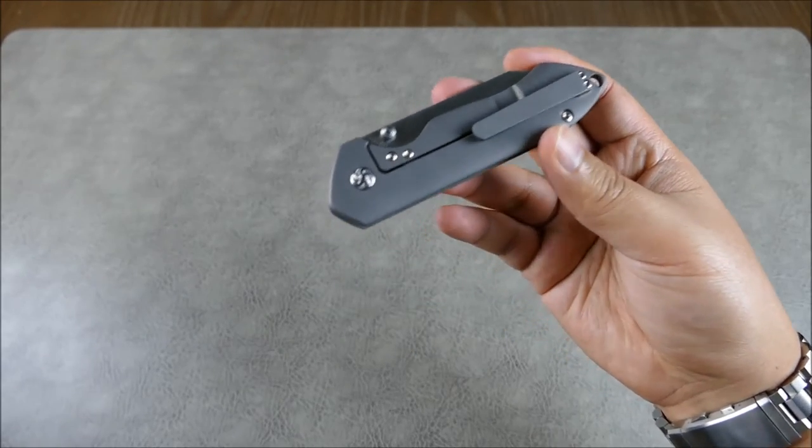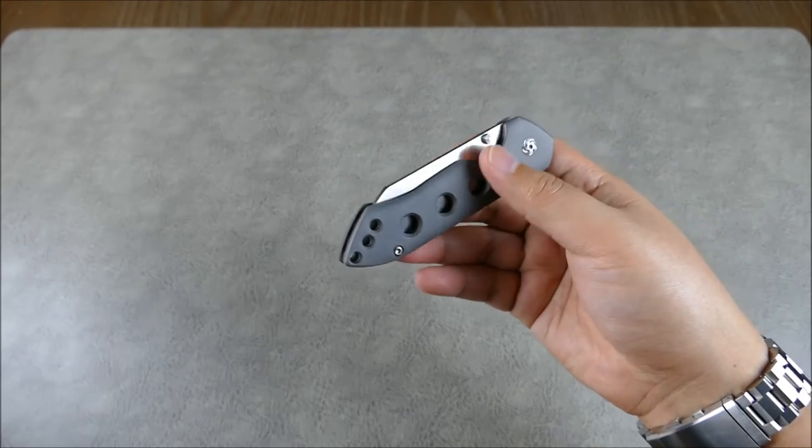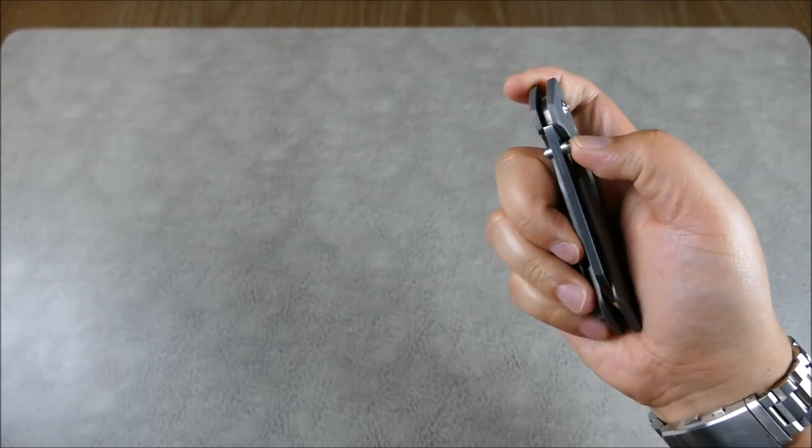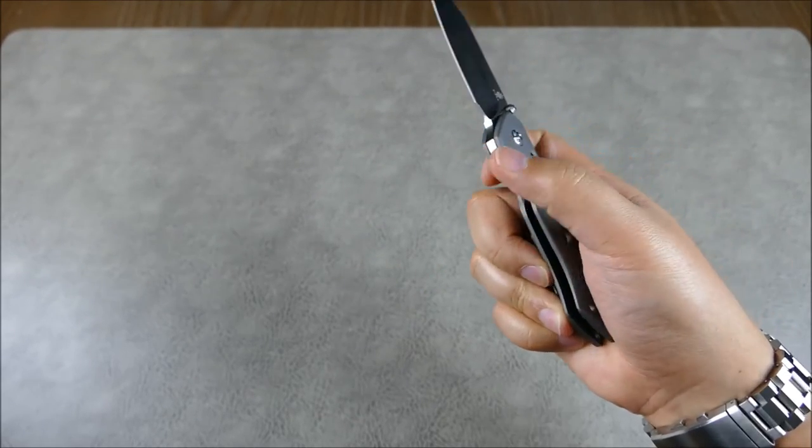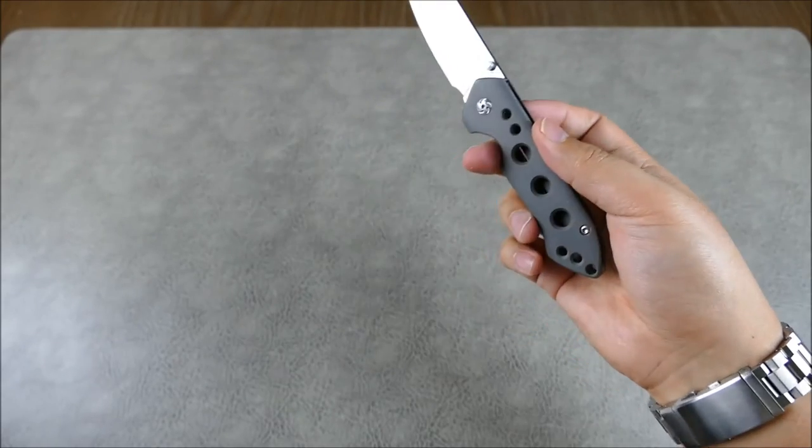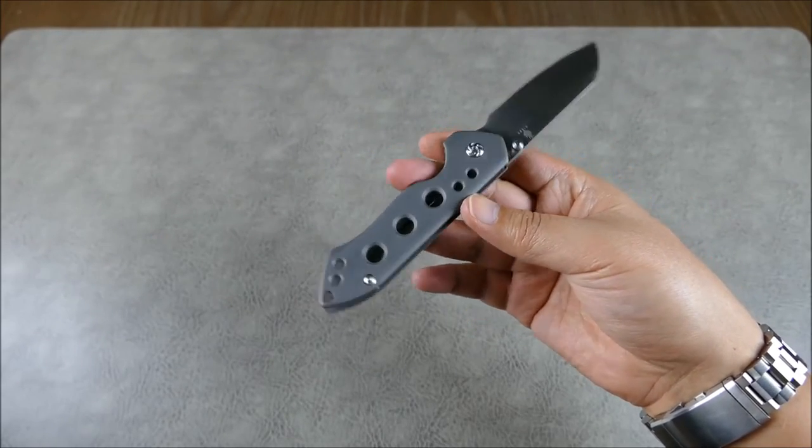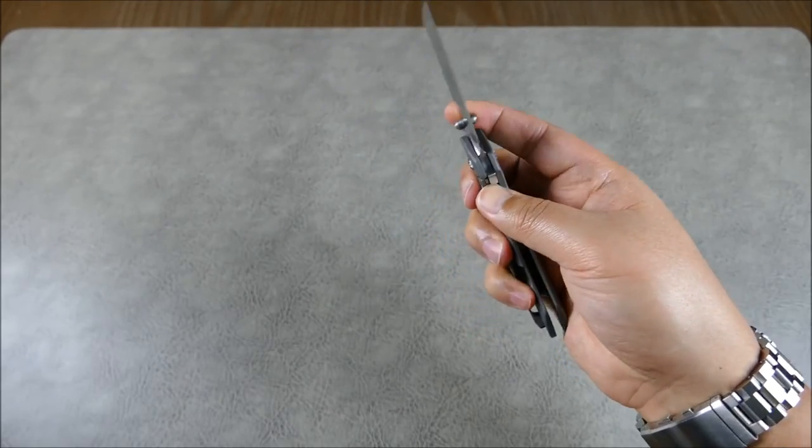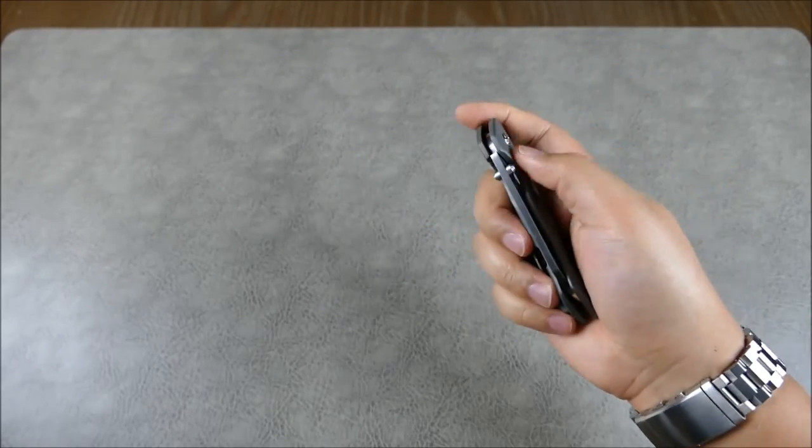Also, as we've covered earlier, the model variants are basically you can get it in thumb stud or flipper, and then with or without holes. I think if I was to get the flipper, I would probably get the one without the holes.